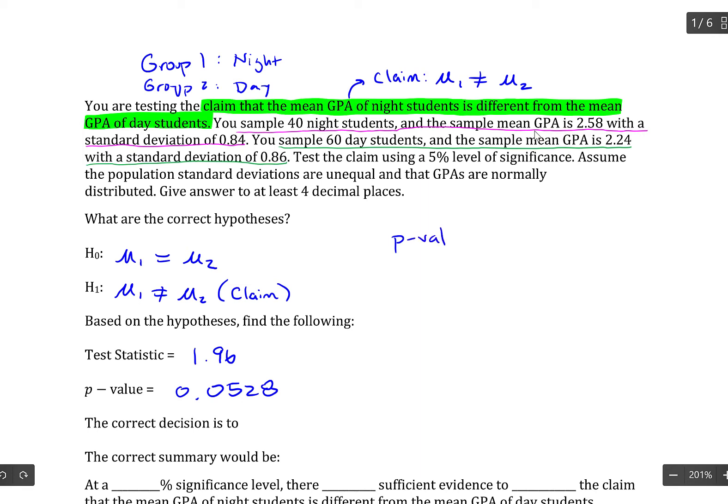And using that p-value, we can make our decision. And to do that, we take our p-value, and I tend to write it as a percentage, compare it to the level of significance of the test, which was 5%. Now this p-value is a little bit larger than 5%. And the rule is, if p is low, the null must go. But in this case, p is larger than alpha, so we fail to reject the null hypothesis.